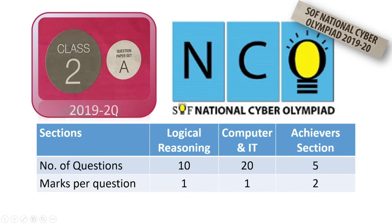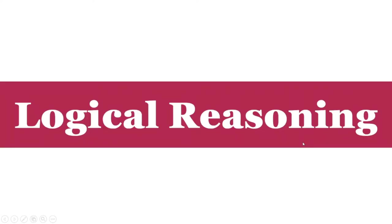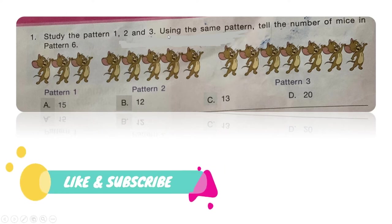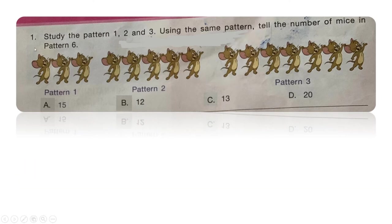This paper has three sections: Logical Reasoning, Computer and IT, and Achievers Section. Our first section is the Logical Reasoning section. The first question: study the pattern 1, 2 and 3 given in the images. Using the same pattern, tell the number of mice in pattern 6. Is it option A: 15, option B: 12, option C: 13, or option D: 20? Your time starts now.